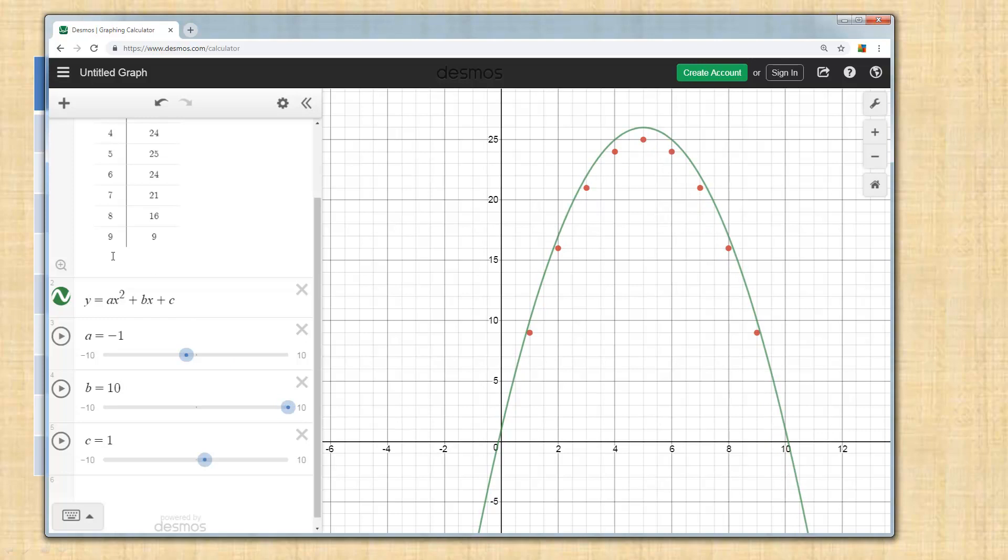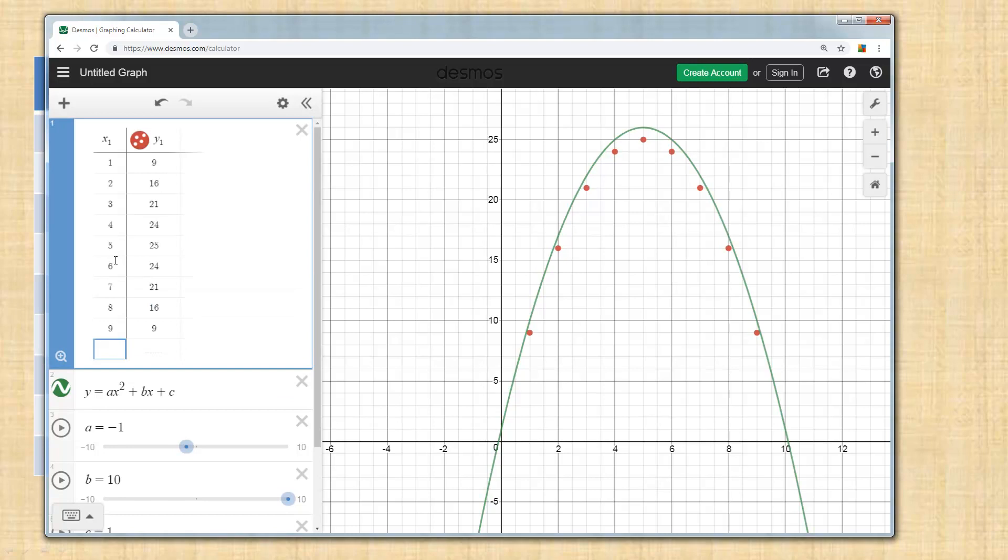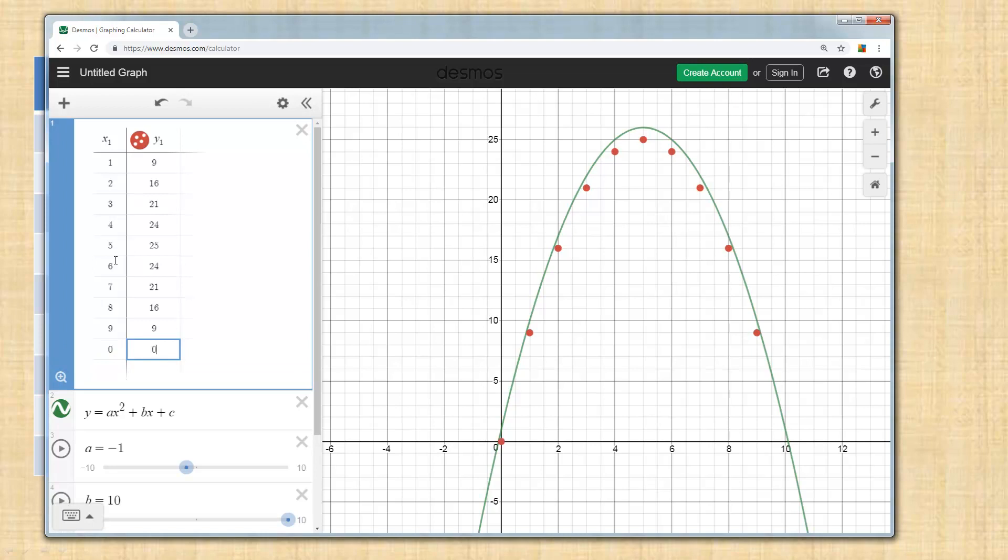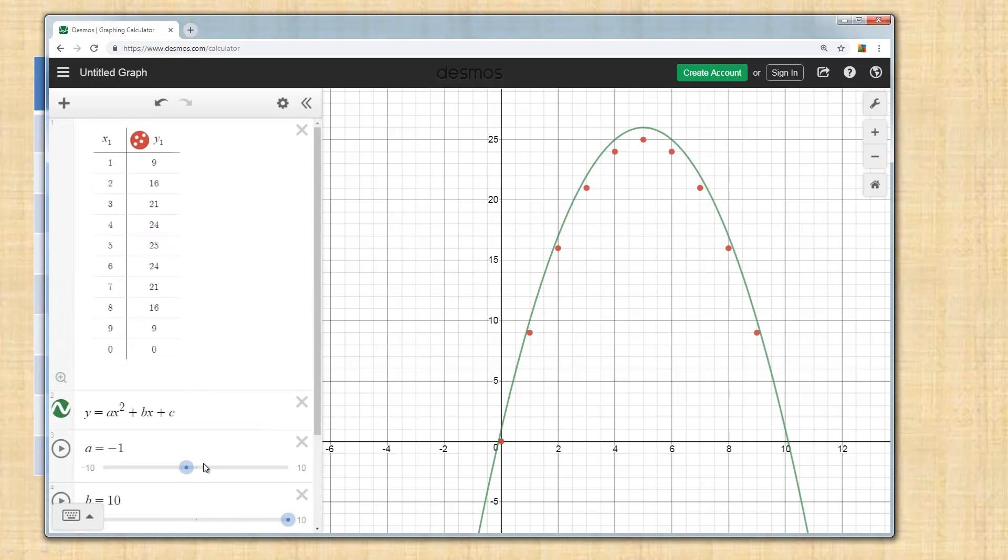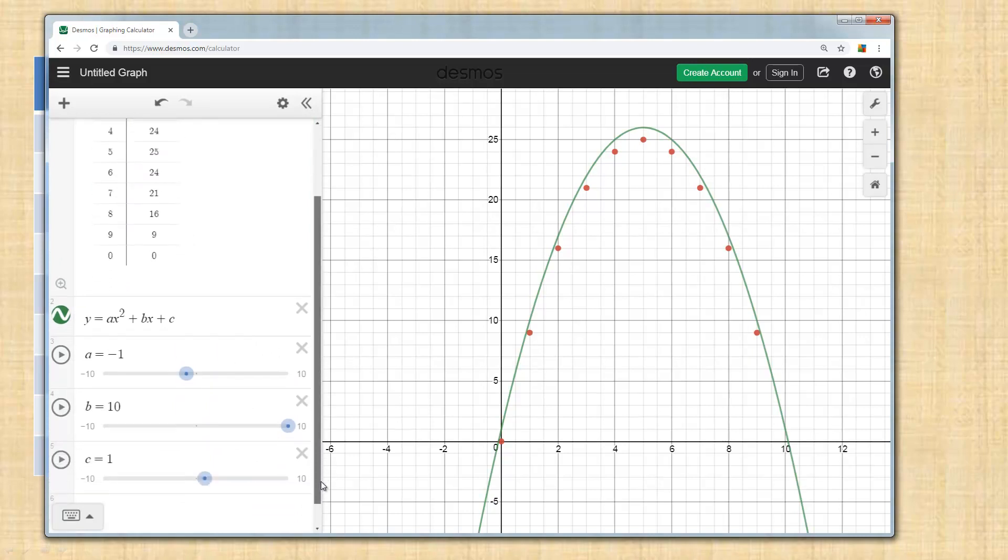I didn't put in the table, but another value here in the table is if the rectangle had the width of zero, you would have an area of zero. Okay, so that's another point. There's actually a 10-zero point over here too. So now, C needs to be zero.